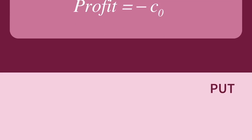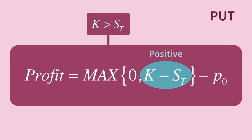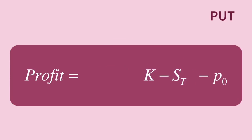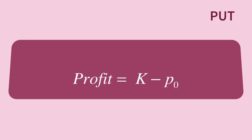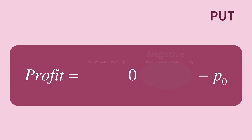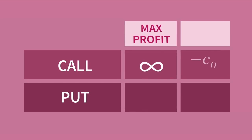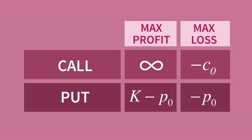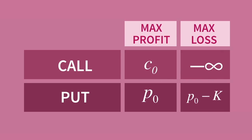For a put option, value is dependent on the underlying price falling as low as possible so that our ability to sell at the strike price is more valuable. We push the underlying price to the limit in the other direction — down to zero — giving us the maximum possible profit on a put. If the underlying price increases instead, the option will expire worthless, so the maximum loss to the option holder is the premium. Options are a zero-sum game, so if we take the perspective of the option writer, we simply look at the negative.